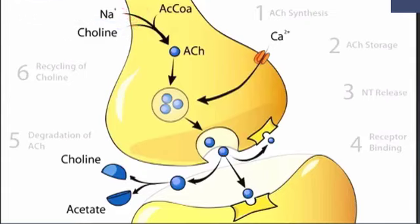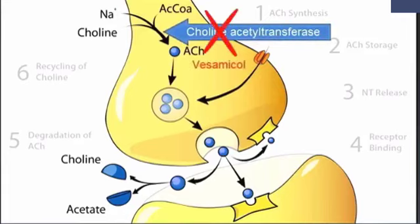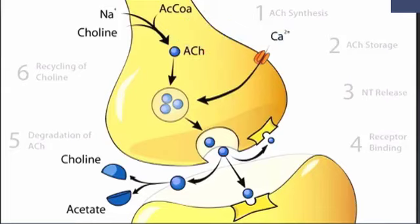Once choline is in the cell, it must be attached to acetyl-coenzyme A, a byproduct of the Krebs cycle and fatty acid oxidation. That reaction is catalyzed by an enzyme called choline acetyltransferase, which can be inhibited by a substance called vesamicol. After acetylcholine is synthesized, it's packaged and stored in vesicles. The vesicles also contain ATP, which is probably a co-transmitter that may inhibit the release of acetylcholine or norepinephrine. Most autonomic neurons release co-transmitters as well as their primary neurotransmitter.